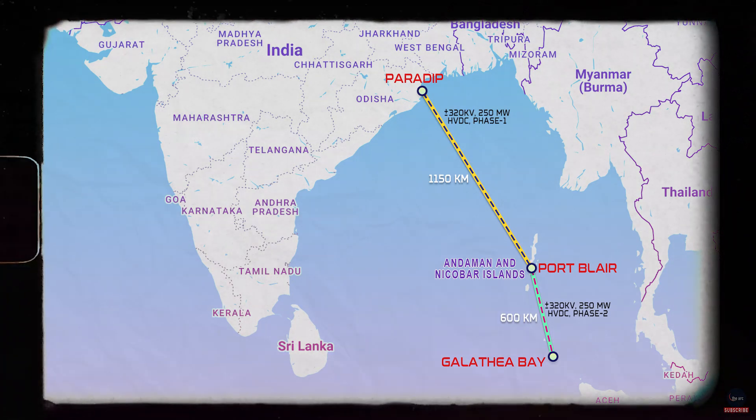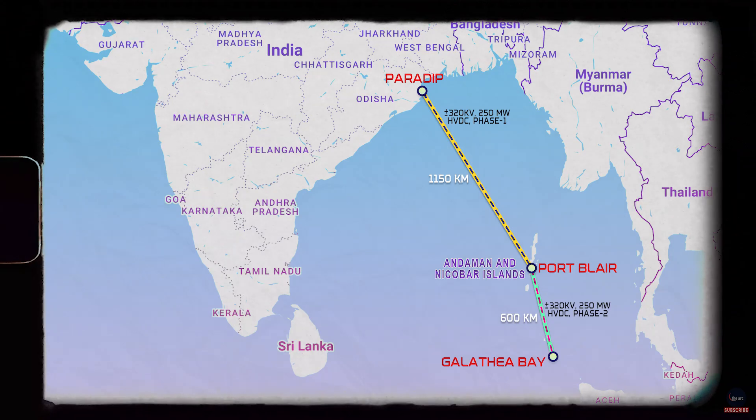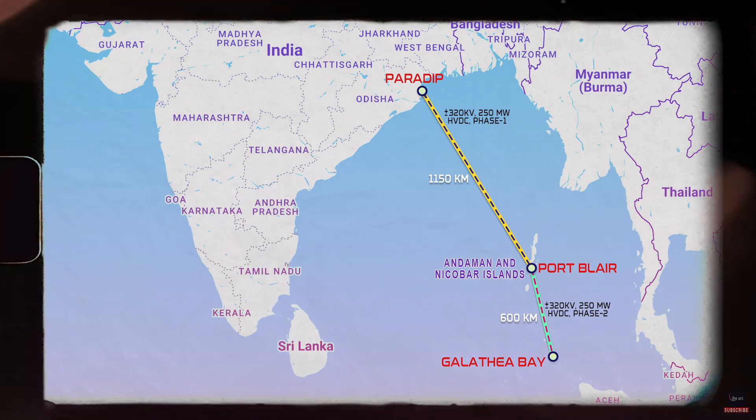In two phases, the high-voltage direct current undersea cable of 500 MW capacity will be laid. The project is very important as India is developing a mega transshipment port at the Nicobar Islands. But even after considering the increased power demand, the total demand for electricity for the entire Bay of Bengal Islands remains less than 100 MW. Then why is the government laying 500 MW cables to the Nicobar Islands?